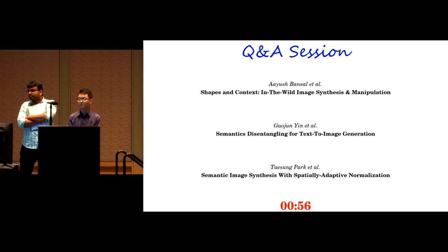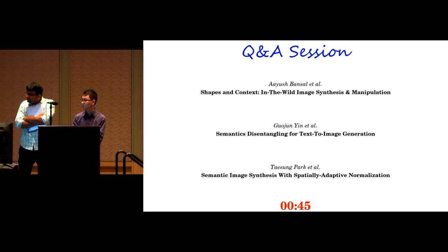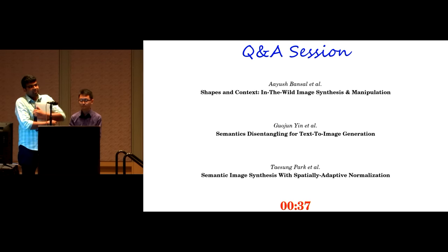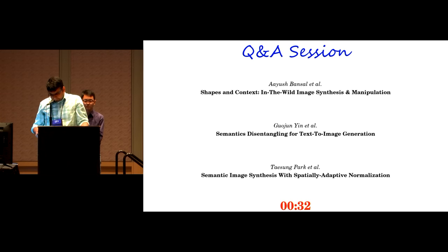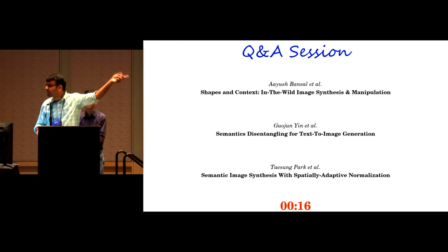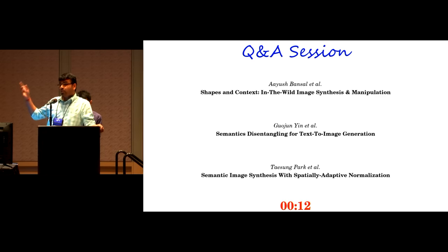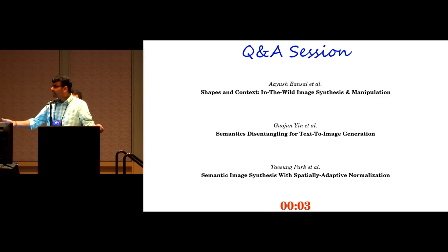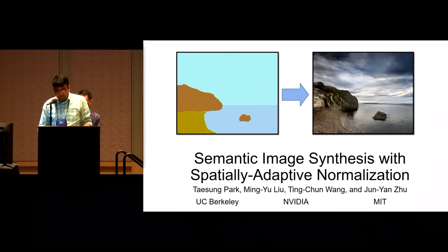A question for the shapes and context work: you ended with a stirring defense of nearest neighbors. Could you elaborate on what you think you're capturing that a neural network isn't? One important advantage from a user-based application perspective: if you deploy an app to a million users and afterwards a user wants a new example or category, one way is to retrain a new model. Alternatively, you can just download 10 images from the internet, add that label, and add them to your dataset. It's easy to index new data.